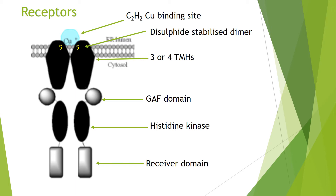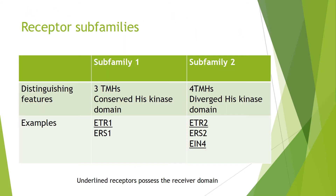Overall, ethylene actually binds the receptor and inhibits its ability to activate the downstream protein, which is a serine-threonine kinase called CTR1. In Arabidopsis, there are five ethylene receptors that all share similar structures. However, the number of transmembrane helices changes, and the histidine kinase region also changes — whether it's conserved or has diverged.